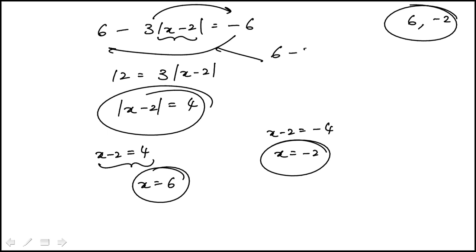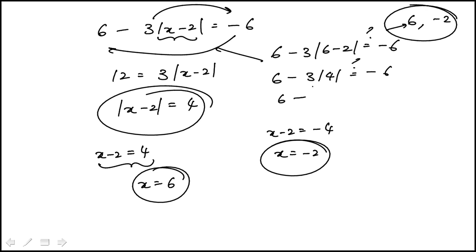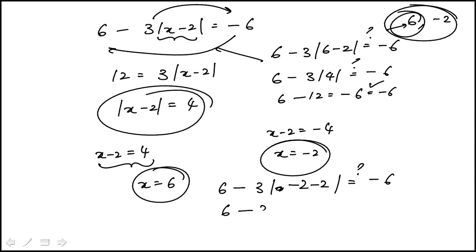You can also check by substituting to see if these work out. I'm doing it first for 6: 6 minus 2 is 4, and that's 6 minus 12, which is indeed equal to minus 6. So that one works. For minus 2: the absolute value of minus 4 is 4, so this is 6 minus 12, which is indeed minus 6. Also works out.